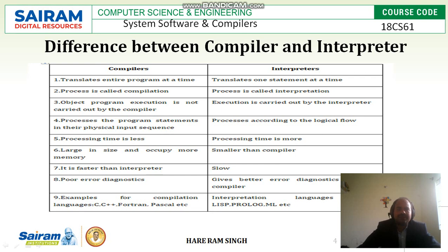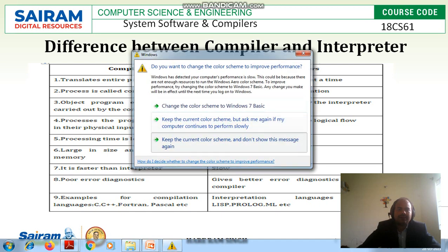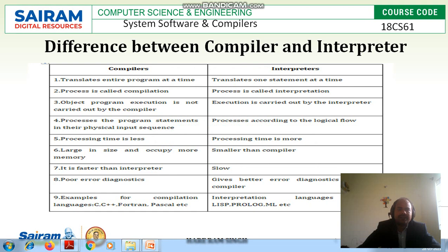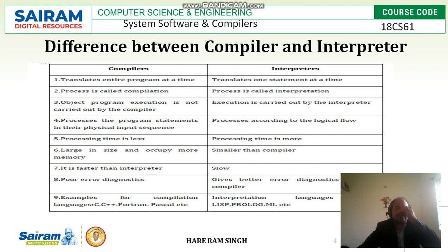Here we will see the differences between compiler and interpreter. First, the compiler translates the entire program at a time into an assembly program, but the interpreter translates one statement at a time. Second, the process in a compiler is called compilation — converting the source program into the target program — while the process in an interpreter is called interpretation.